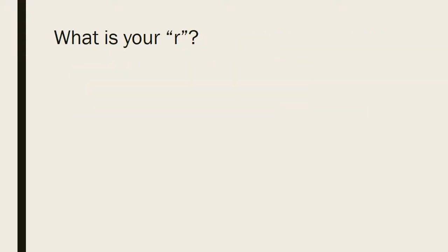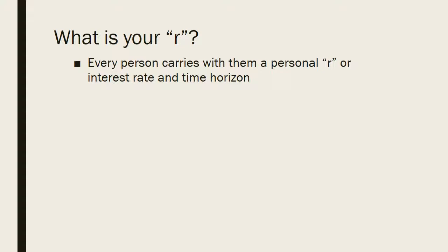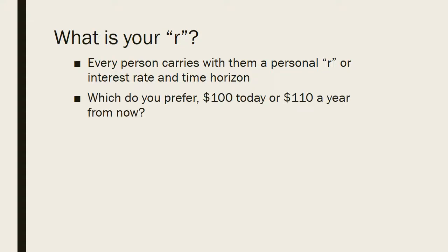How do we determine what that rate R is in the present value and future value formula? Sometimes it's given to you as an investment, but often the key is indifference — what do you prefer: $100 right now or $110 a year from now? When you answer that question, you realize you're holding that R value in your head, and it changes from moment to moment. As you answer questions like this, you can actually figure out your own personal preferences across time — it's a really cool element of self-discovery.